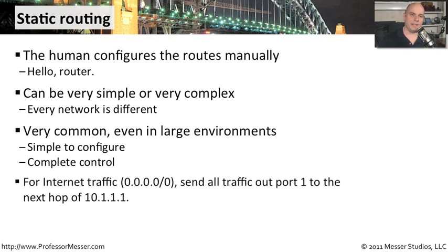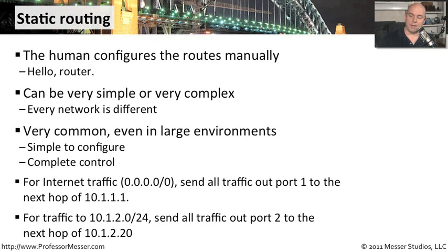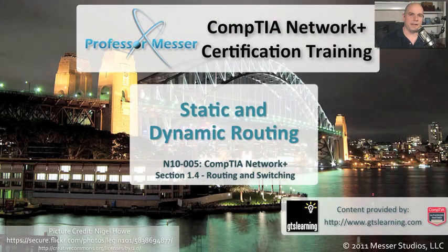A very common configuration, if you're sending out to the internet for instance, is to put in what we call a default route. For internet traffic — which is all traffic — 0.0.0.0, which is a shortcut for everything, send all of that traffic out port 1 to this next hop router on the internet side, and that next hop is 10.1.1.1. Maybe you have some local traffic, and that local traffic is the 10.1.2 network with a slash 24 — send all of that traffic out port 2 to the next hop of 10.1.2.20. Those are very common static routes you might expect to see in your router. Whether you're using dynamic routing or static routing, the ultimate goal is to make sure that all of your end users' traffic is able to get to its final destination.